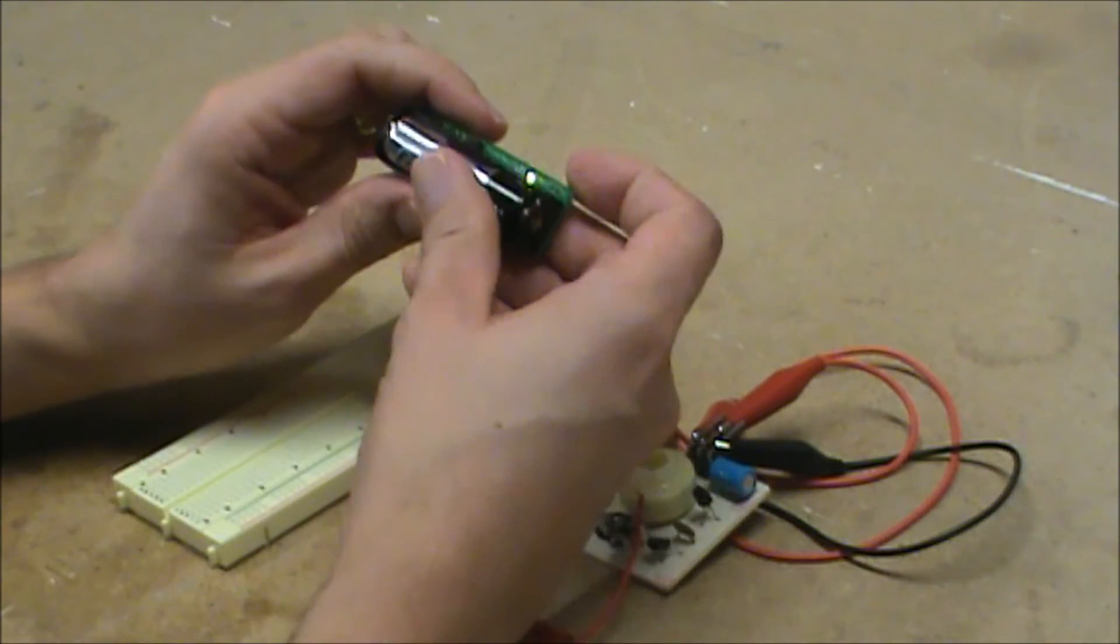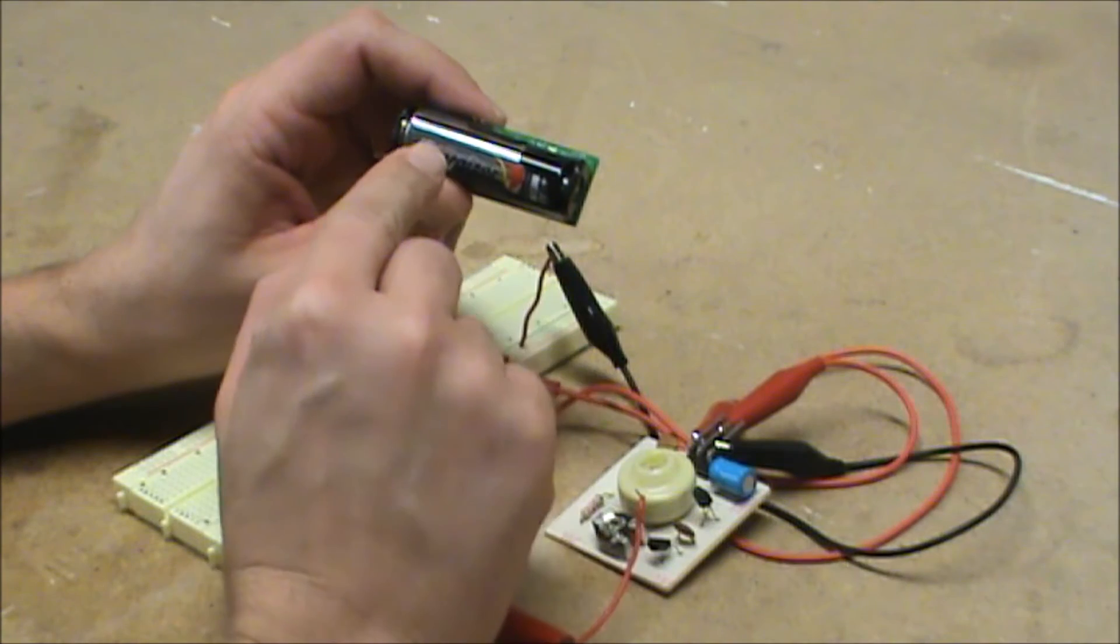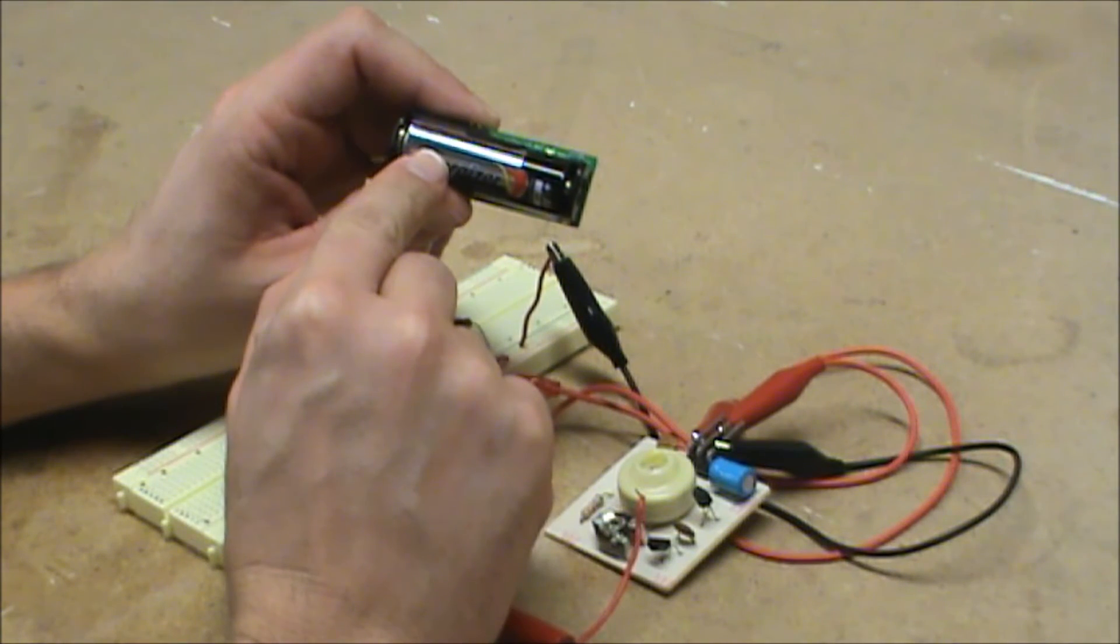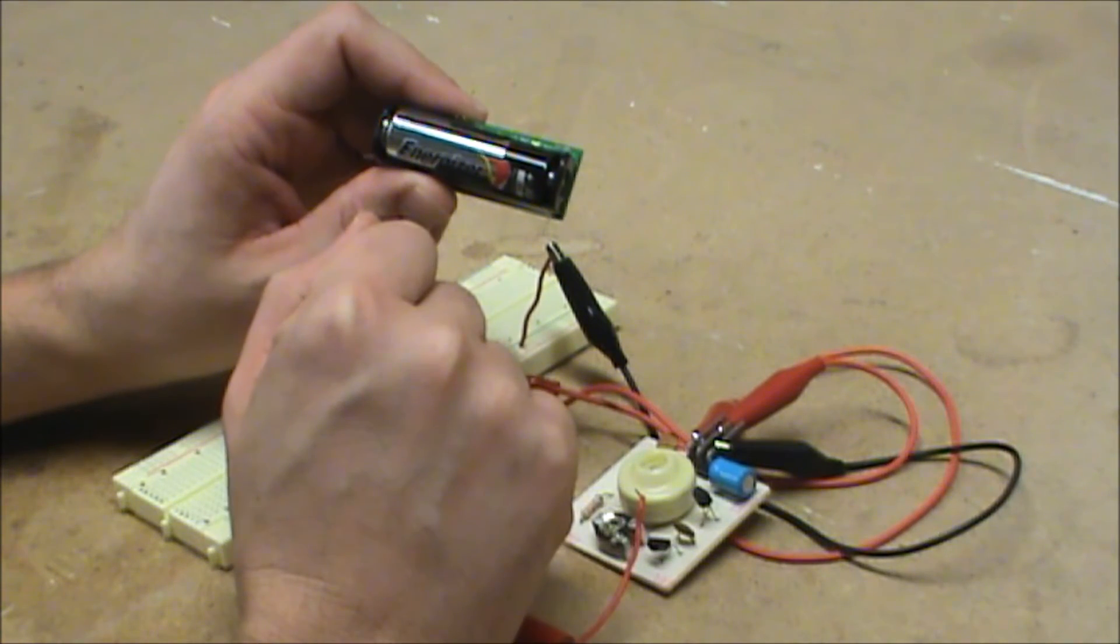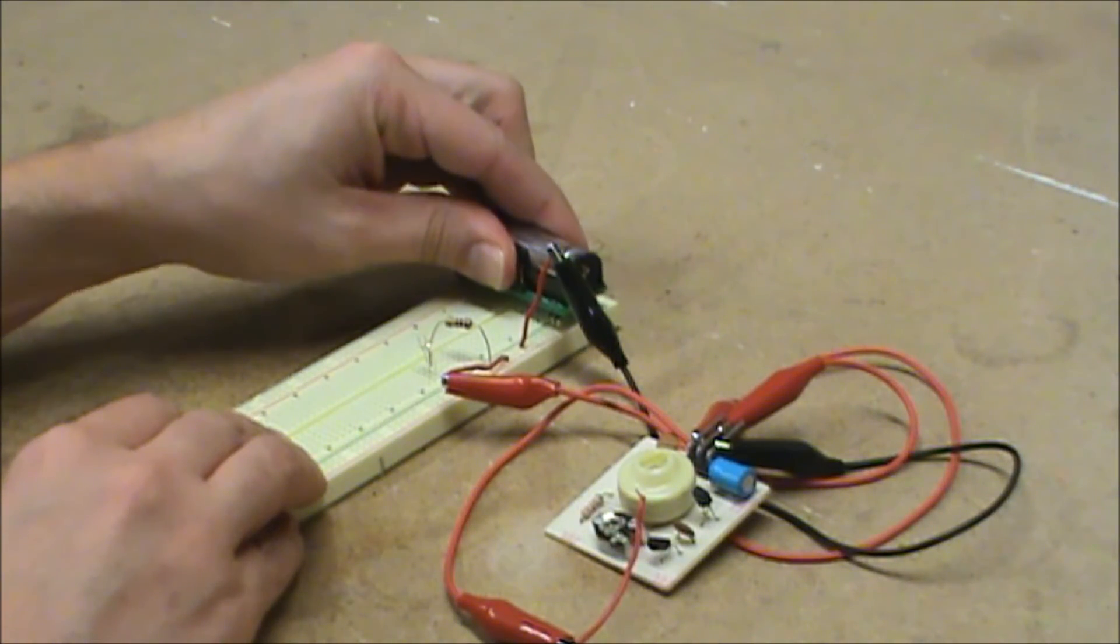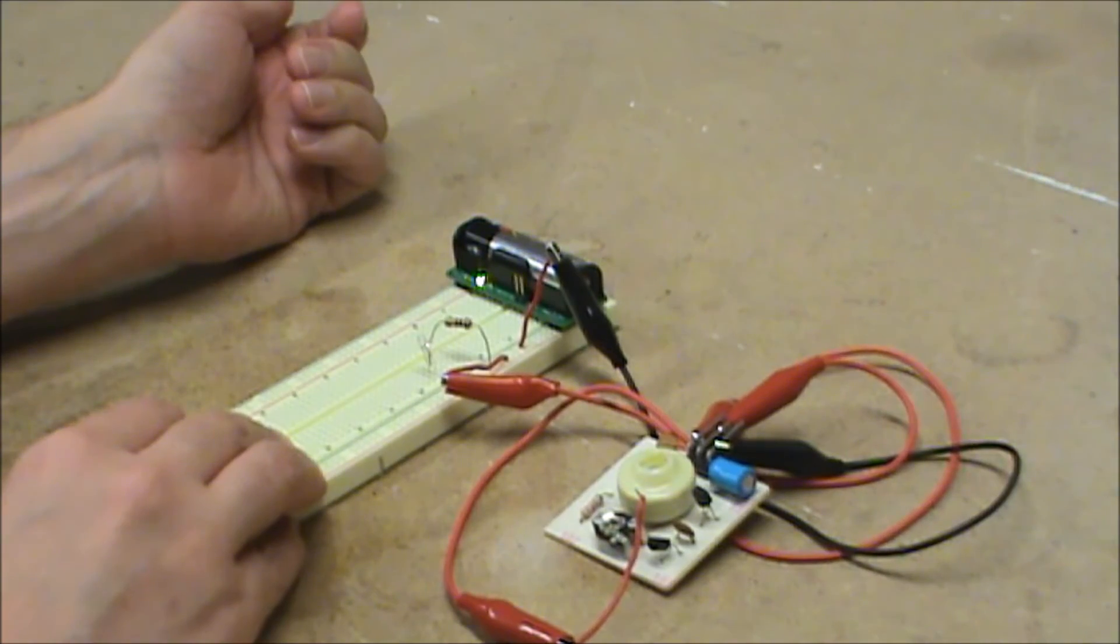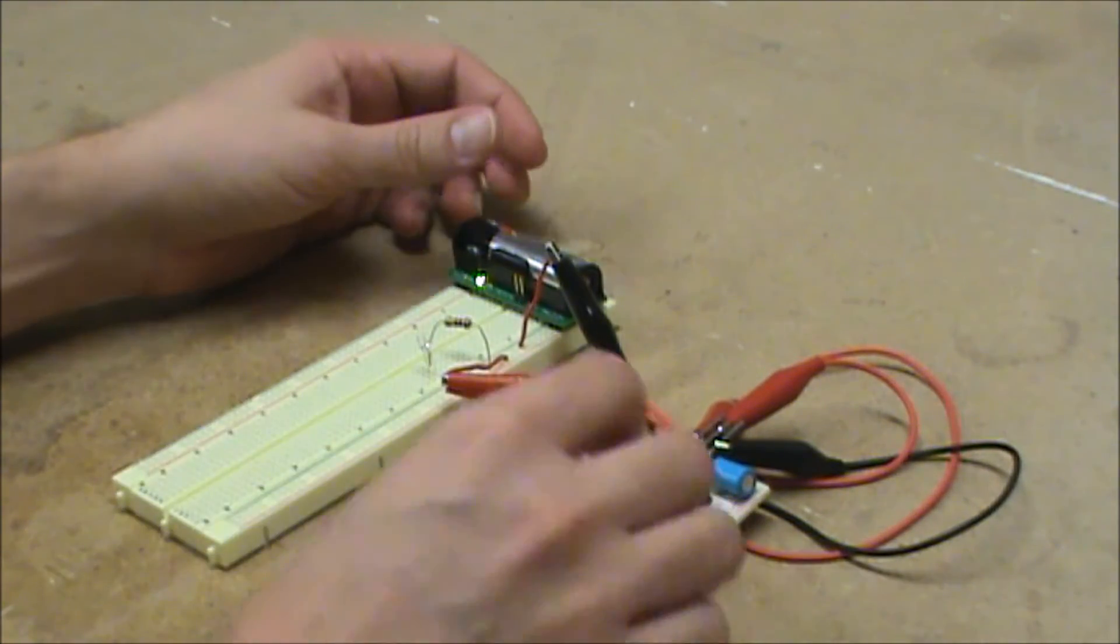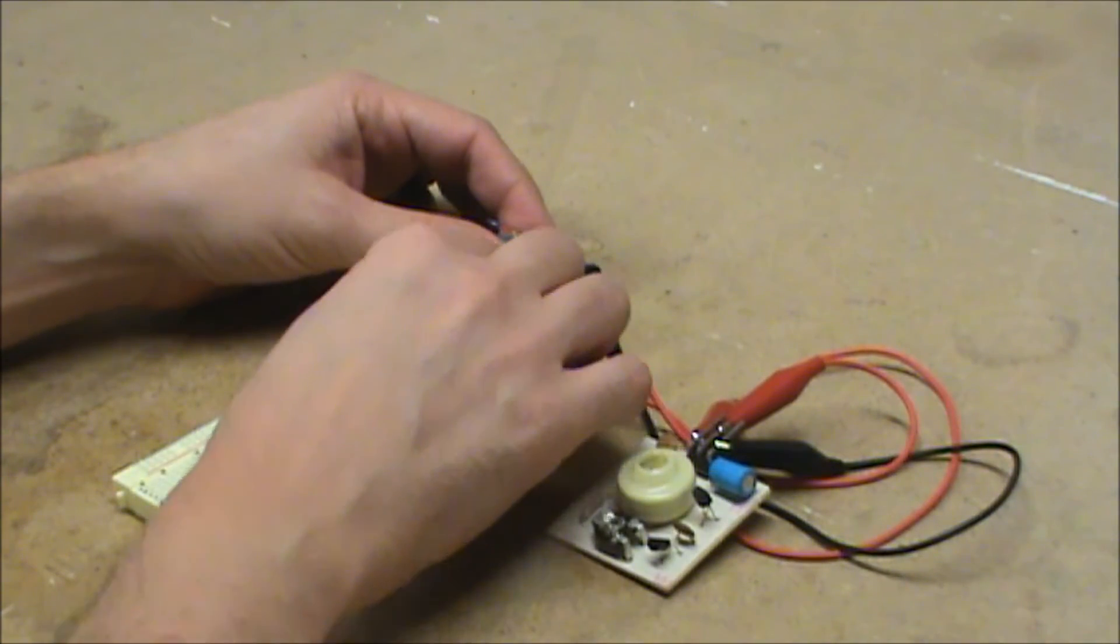So I decided to make what I call the Boostic. It takes a 1.5 volt AA and boosts that voltage up to 3.3 volts or 5 volts. You can plug it right into your solderless breadboard rails, and then you can use that voltage running down the rails to power a circuit that needs more voltage.